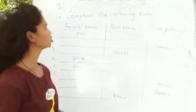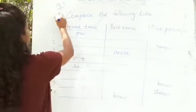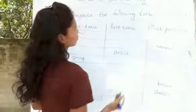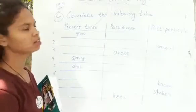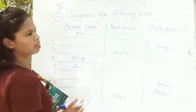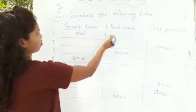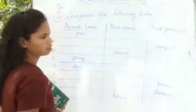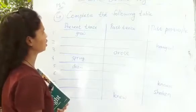Next, coming to page number nine in your book, in your G, it is given complete the following table. Here a table is given with some tenses, so you have to complete it. Present tense, past tense, past participle. Your words are given in one column, so on the blanks you have to fill it.